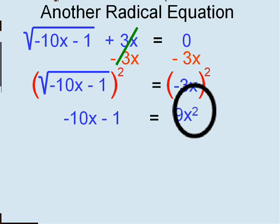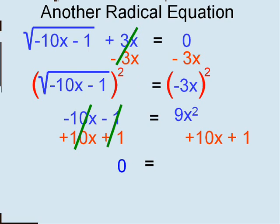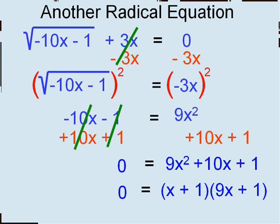We're going to use the zero property, so we get zero on one side by adding the opposites of everybody. On the left side everything goes away — write that zero; zero is a number. On the right side all the terms are unlike terms, so I just write it. The zero property requires factoring. This is going to have two answers. The first factor, x plus one, tells me x equals negative one. And from the factor 9x plus one, x equals negative one ninth.